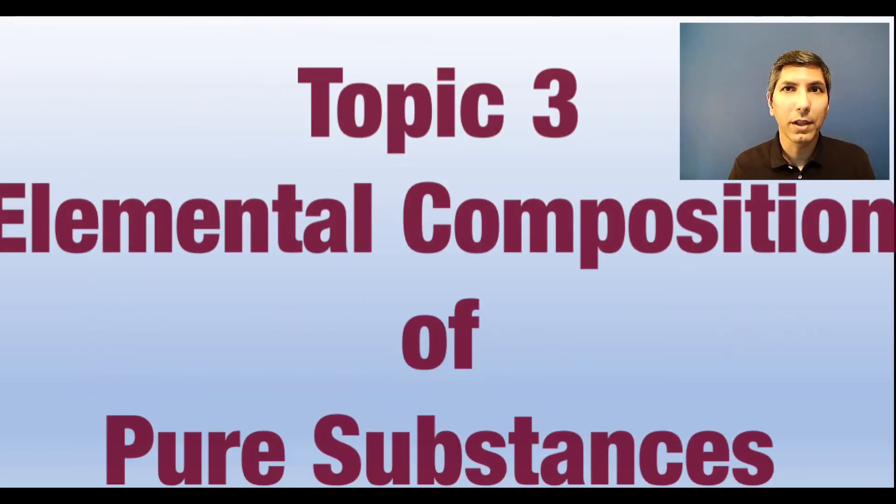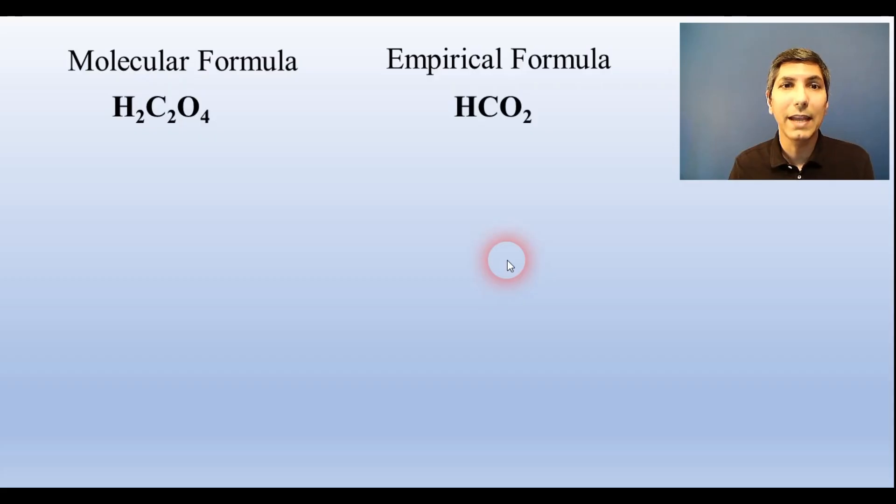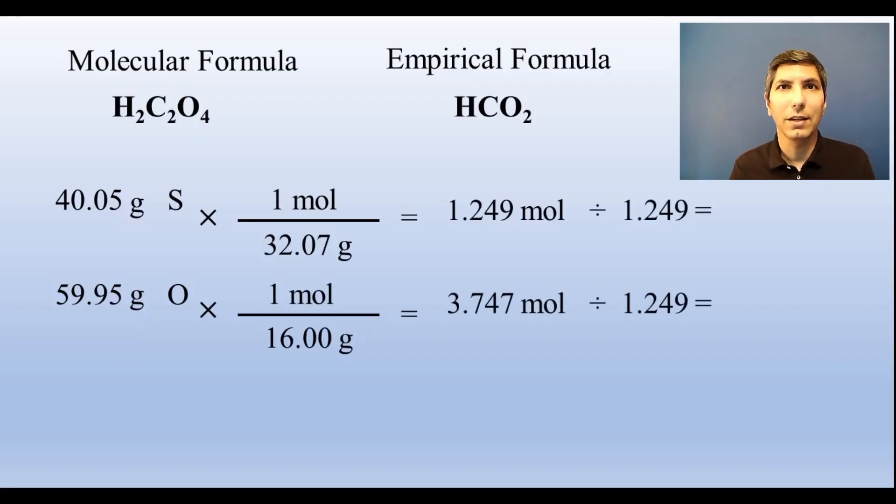You should be able to determine an empirical formula from a compound's composition data. An empirical formula is the simplest whole number ratio formula for a compound. It's like taking a formula and reducing it down to lowest terms. So for example, the molecular formula for oxalic acid is H2C2O4, but its empirical formula is HCO2. If we have a substance that contains 40.05 percent sulfur and 59.95 percent oxygen by mass, we would express those percents as grams, just like we see here. Then convert both of those masses to moles using those elements' respective atomic masses, just like this. Then when we get the moles, we divide each of them by the smallest of those values. So these are the relative subscripts of the elements. So the one and three tell us that the empirical formula is SO3.